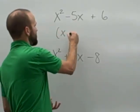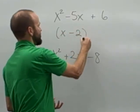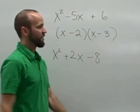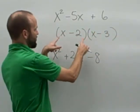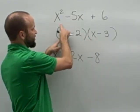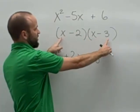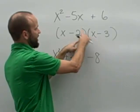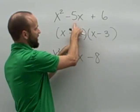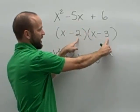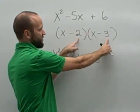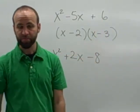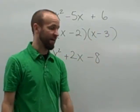So my factors are going to be x minus 2 and x minus 3. When we multiply the x's, I get x squared. This gives me a negative 3x and a negative 2x, which is negative 5x. And then when I multiply negative 2 and negative 3, we get the positive 6. So that's all we have to do.